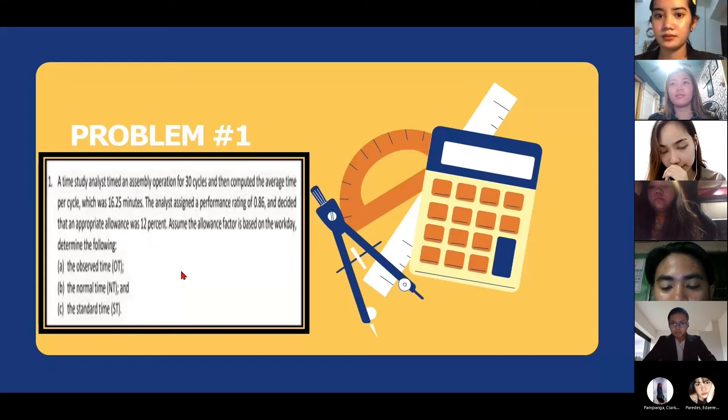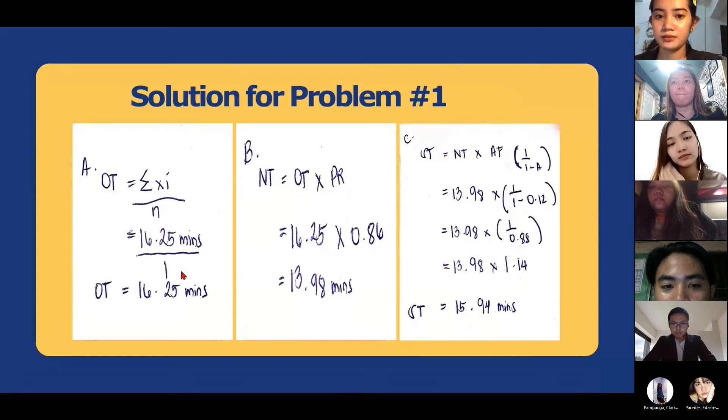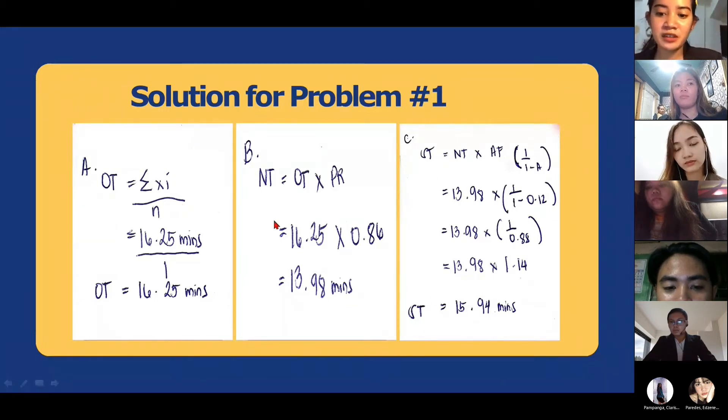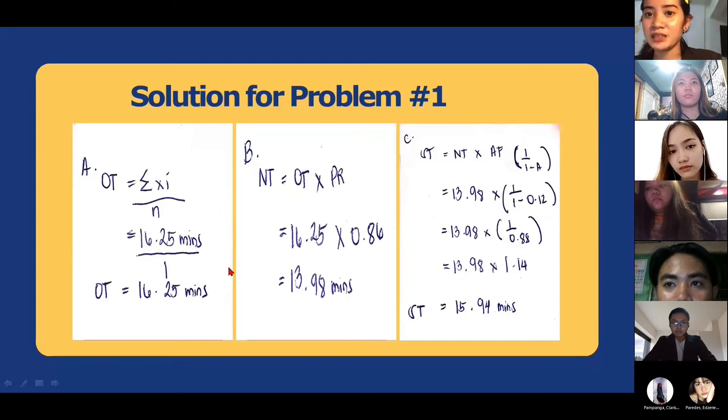I'm Edzine Marie Patricia Paredes. I will explain how I compute the observed time. Sum of recorded times over number of observations: 16.25 minutes over 1 is equal to 16.25 minutes observed time.